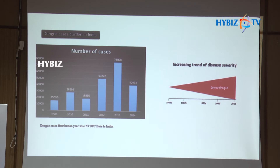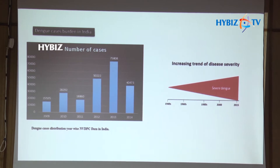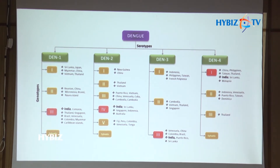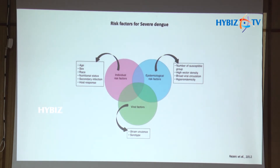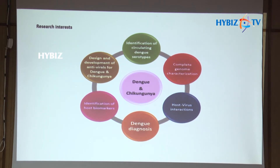This is the Indian scenario — the number of cases has been increasing recently and severity has also increased. As mentioned, dengue virus contains 4 different serotypes, and each serotype is subdivided into genotypes. The red entries for each serotype indicate the genotypes reported from India. For disease severity, there are many contributing factors — from the host side, the individual side, and the environmental side. Our lab is involved in identification of strains, gene characterization, and host-virus interactions to understand the reasons behind viral severity.